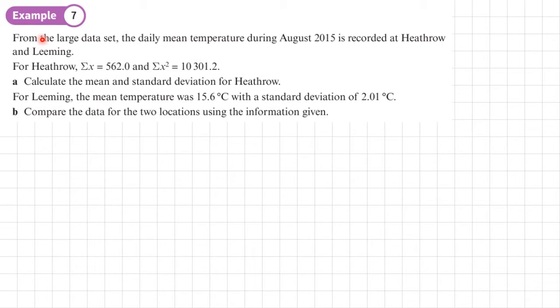Example seven. From the large data set, the daily mean temperature during August 2015 is recorded at Heathrow and Leeming. For Heathrow, sum of X is 562.0 and sum of X squared is 10,301.2. Part A of this question is asking us to calculate the mean and the standard deviation for Heathrow.